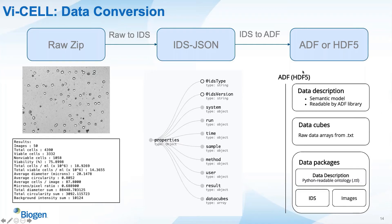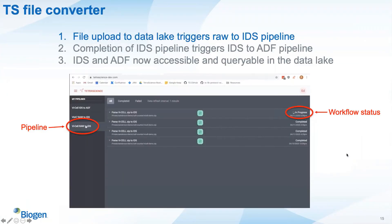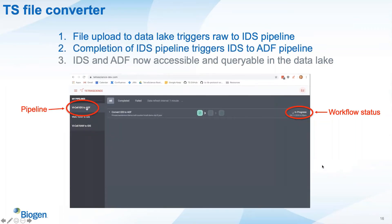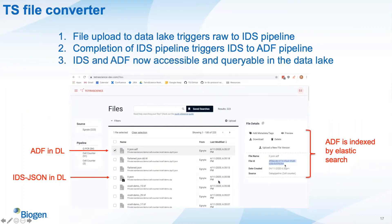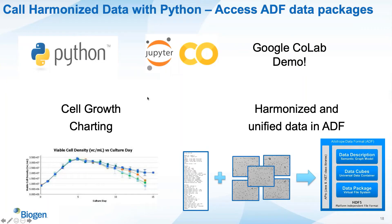Once this IDS is added to the data lake, it triggers the IDS to ADF pipeline. This ADF file is created with data descriptions and data cubes added by the Allotrope Java library, and data packages — which are Python-readable — containing a turtle file of all the triples, the IDS JSON, and all 50 images. So we have all experiment data standardized in one file. I wanted to briefly show some screenshots of our UI: when a zip file is added to our data lake it triggers the zip-to-IDS pipeline, and we can see workflows that have triggered previously as well as a workflow in progress. Once completed, the IDS-to-ADF pipeline is triggered, and we can see the resulting IDS JSON and ADF in our file viewer for the data lake, from which we can get key metadata such as the file ID for use in API requests.